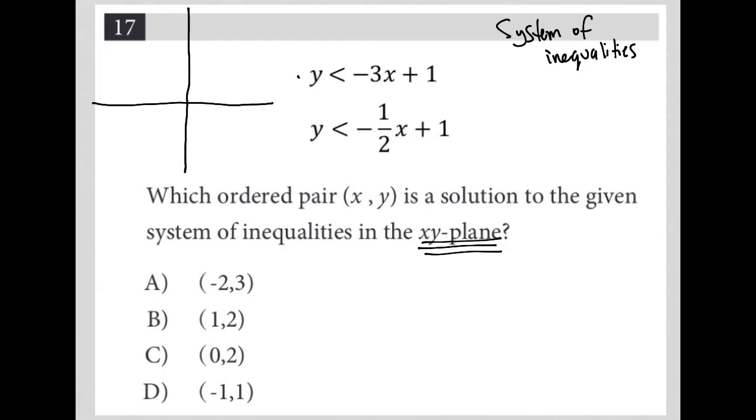I'm going to start by graphing this first inequality. It has a y-intercept of positive 1. So that's 1. Let me just make that 2, 3, 4, 5. The idea is that you want to try to make your spacing as even as possible. So that's 1, 2, 3, 4, 5; 1, 2, 3, 4, 5; and 1, 2, 3, 4, negative 5. So I'm sure that's not perfect, but it should be good enough for what we're doing.